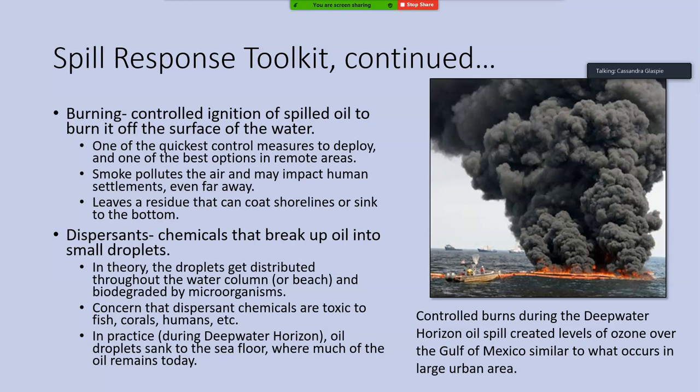In practice, dispersants don't quite work as well as the theory suggests. During the Deepwater Horizon, oil droplets were either distributed throughout the middle water column in an oil plume, or they sank to the seafloor where much of the oil remains. Out of sight, out of mind — you don't have oil oiling beaches and marsh, but that oil is still on the bottom of the ocean causing impacts for benthic organisms. You're just transferring the problem to a different component of the ecosystem.